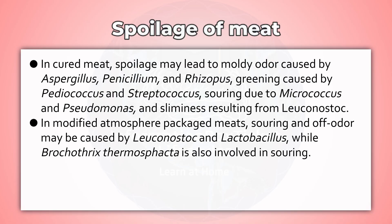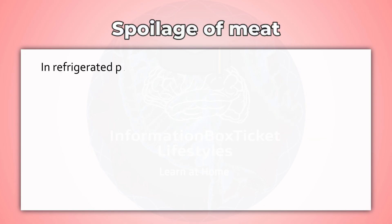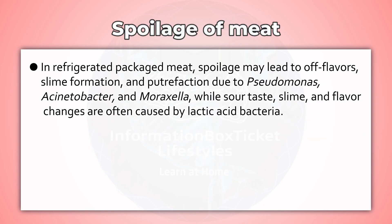In modified atmosphere packaged meats, souring and off-odor may be caused by Leuconostoc and Lactobacillus, while Brochothrix thermosphacta is also involved in souring. In refrigerated packaged meat, spoilage may lead to off-flavors, slime formation, and putrefaction due to Pseudomonas, Acinetobacter, and Moraxella, while sour taste, slime, and flavor changes are often caused by lactic acid bacteria.